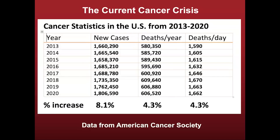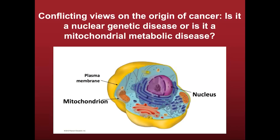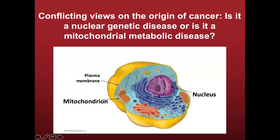One has to ask the question: what is largely responsible for the failure to prevent or manage cancer? In my mind, it has to do with the view of how we understand cancer. Is cancer a nuclear genetic disease or is it a mitochondrial metabolic disease? I'll be discussing information that shows that cancer is primarily a mitochondrial metabolic disease. I will be presenting evidence that it is the mitochondrial damage to oxidative phosphorylation that ultimately leads to the mutations in the nucleus, and that the mutations in the nucleus are downstream epiphenomena of the damage to the mitochondria — the origin of cellular energy in the cell.